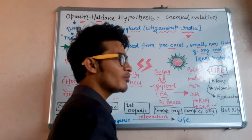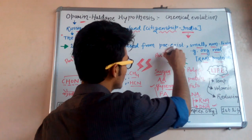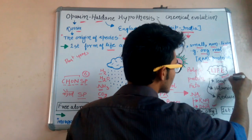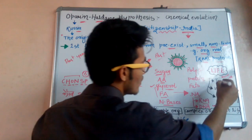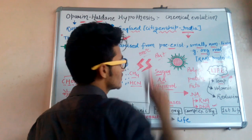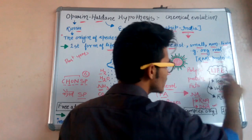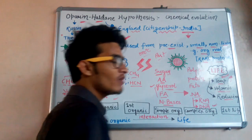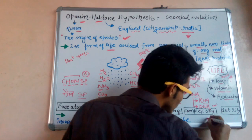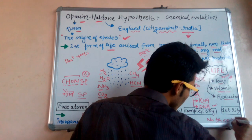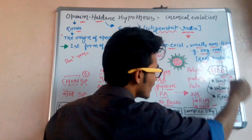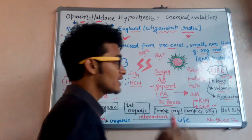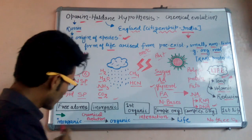Now, what were the important conditions in the past atmosphere? First, the temperature was very high — approximately 800 degrees Celsius — due to volcanic eruptions. Second, the environment was reducing, meaning there was no free oxygen in the atmosphere. These three conditions — high temperature, volcanic eruptions, and a reducing atmosphere — were responsible for the origination of life.